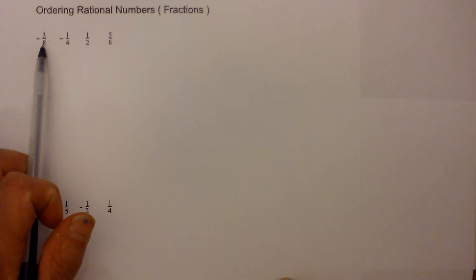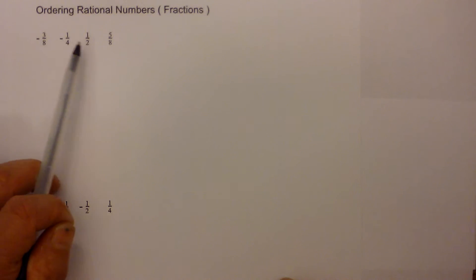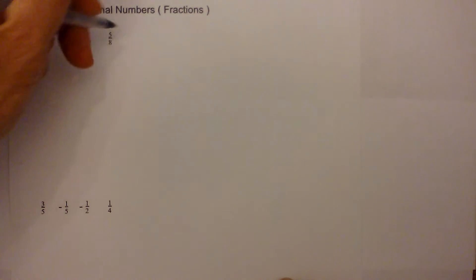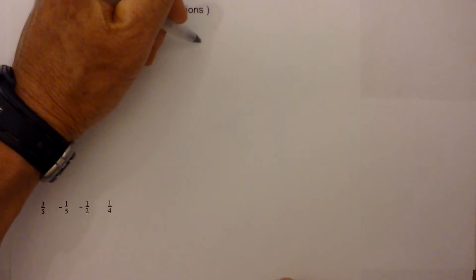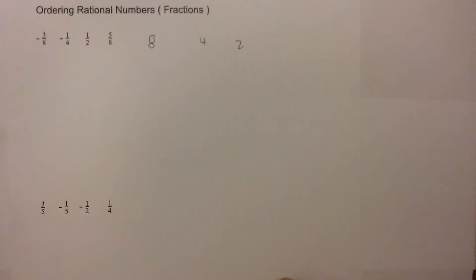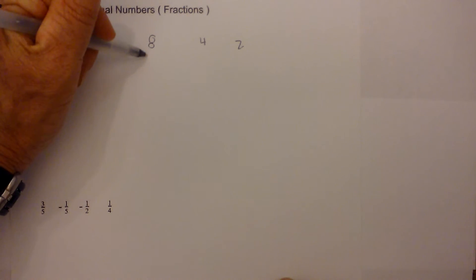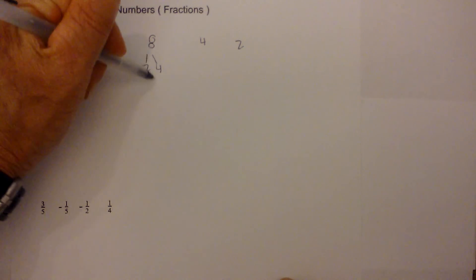The first thing we need to do is get all of them set to a common denominator. Let's see if we can find the common denominator — we have eight, four, and two. An easy method you can use is to create a factor tree for each of the numbers and then see which numbers they have in common.